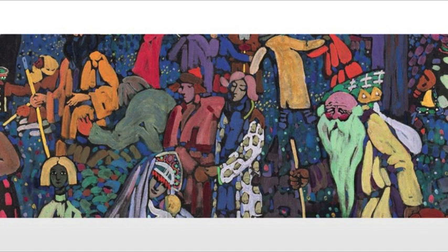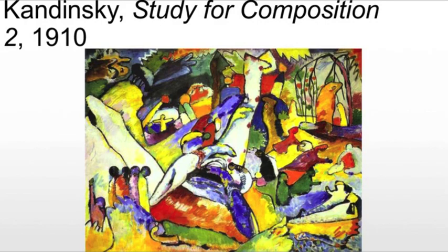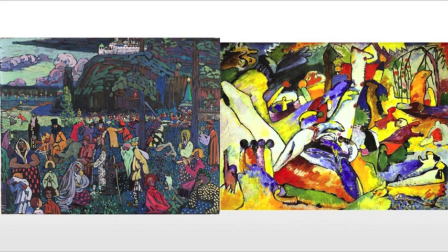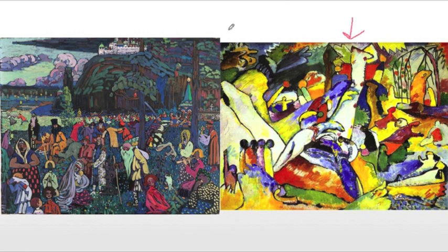The only reason I bring this painting up is because we want to look at the study for Composition 2, which is based on A Motley Life. This is actually an abstraction of the previous work, or at least parts of it. Kandinsky sees abstraction as simplification. As we compare the two, the forms are there, the figures are there, the hill in the background, the church or at least the idea of the church — the hill with the castle, the group of people. It's not one-for-one, but you're definitely getting the same idea back and forth.